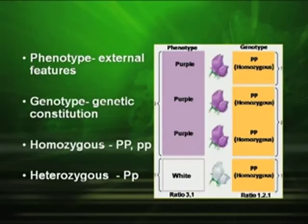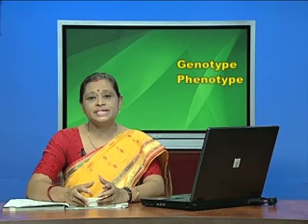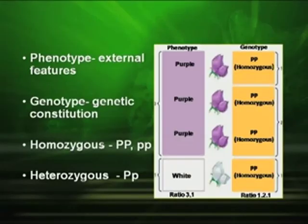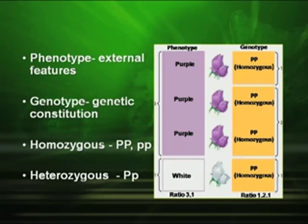The genotype is the genetic constitution of an organism. This genotype can be homozygous, meaning both alleles of the gene are of the same type. As you can see in the diagram, the purple color flower can be denoted by capital P and capital P, or a white color flower by small p and small p. On the other hand, in the heterozygous condition, the alleles are of two different types, denoted by capital P and small p.